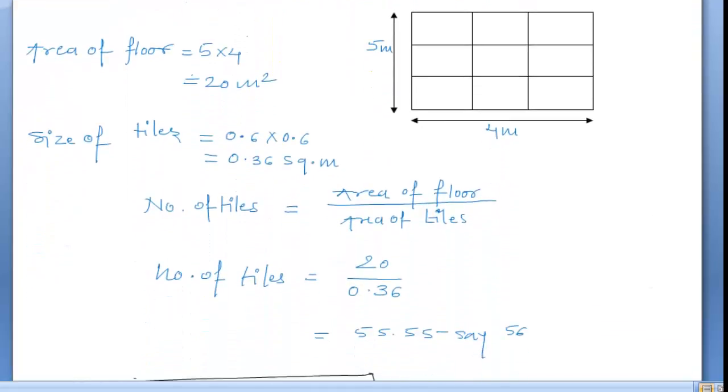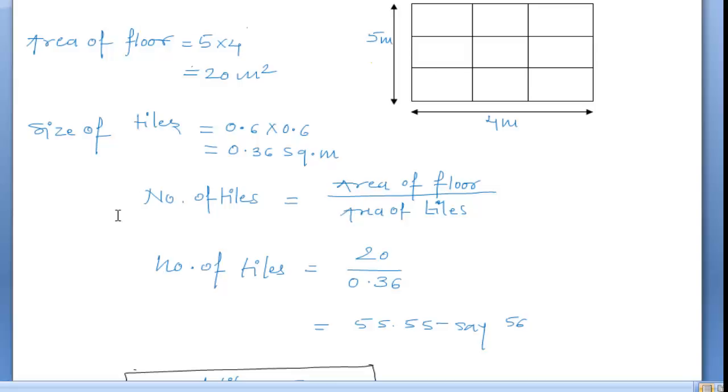If we want to calculate the number of tiles, we know the formula: number of tiles equals area of floor upon area of tiles. We just calculated the area of floor and area of tiles. Just put the values and get the answer. Area of floor is 20 square meters.